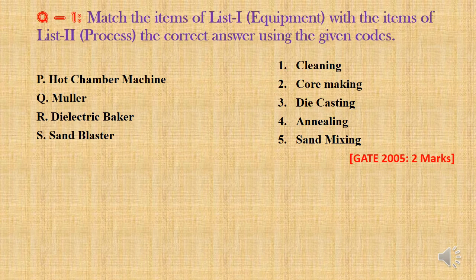We have to match column 1 and column 2. Column 1 is given with equipment and column 2 is given with the process. First, hot chamber machine will be attached with the metal die casting equipment to feed the molten metal into the die. Next, muller is used for mixing the molding sand. Next, dielectric packer is used for packing the core — that is for core making. And finally, sand blaster is used for cleaning the casting.